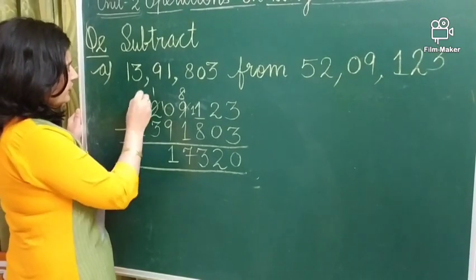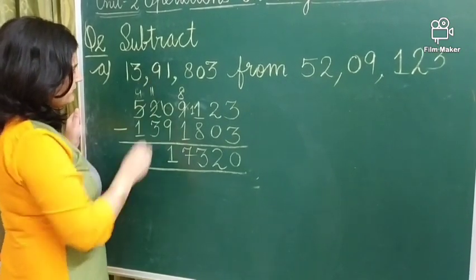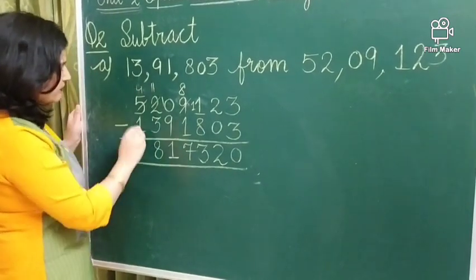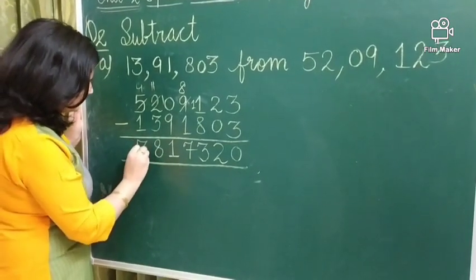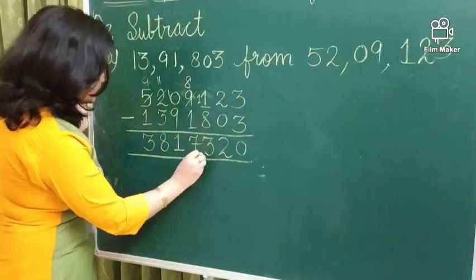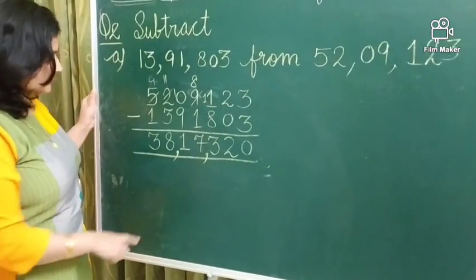We have to borrow from here. 4, 11. So, 11 minus 3, 8. 4 minus 1, 3. After subtracting, apply the commas between the periods. And you will get your answer.